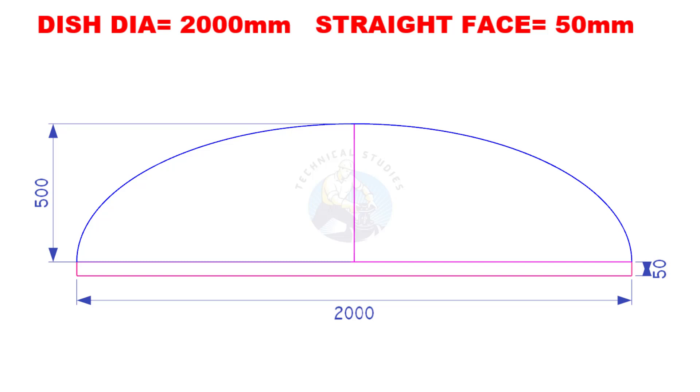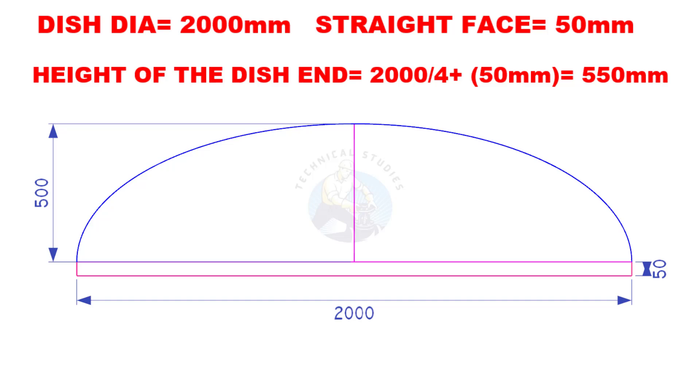Assume that the diameter of a dish end is 2000 mm and the straight face is 50 mm, then the height of the dish end will be 2000 divided by 4 plus 50 mm.